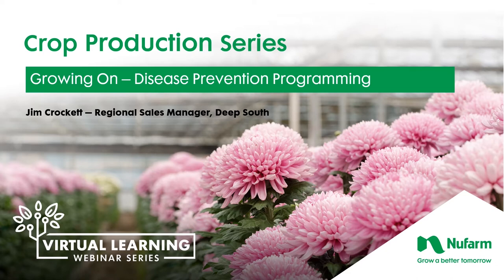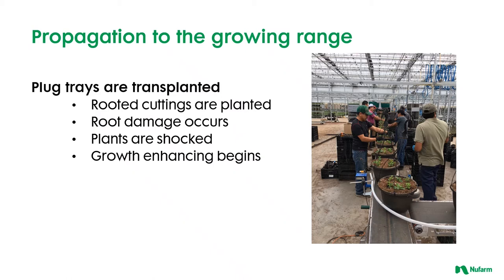Welcome to the second in the series on disease prevention programming — the crop production series. Moving from propagation to the growing-on phase, you have to go through the transplant area, where trays and root cuttings are removed from the propagation area, stuck into pots, and roots are damaged. Plants are shocked because they're moving from a high humidity and temperature area into a cooler, much drier production area. We have to enhance the growth factors to prevent those stresses from becoming disease problems.